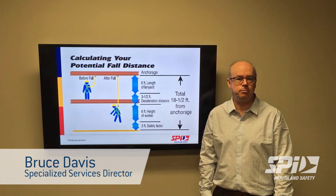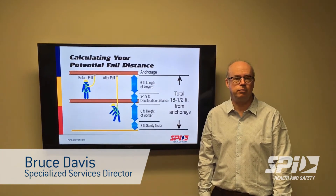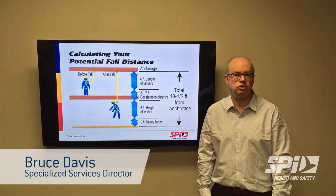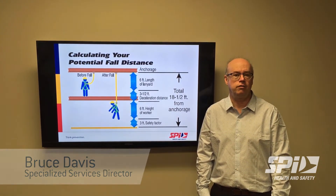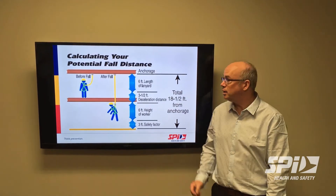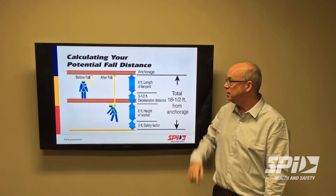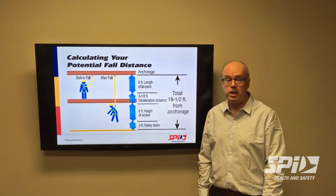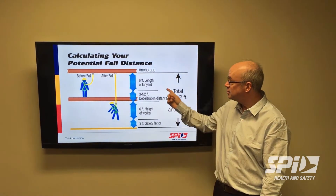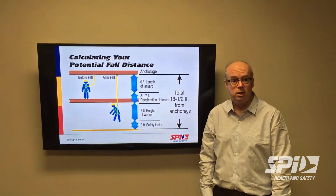I would like to discuss the basic elements that we must consider when we do a fall clearance calculation for our fall protection equipment. The first element that we must consider is from the anchor point the length of our connecting device — in this example, a six-foot lanyard.